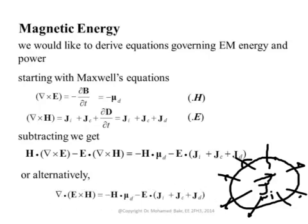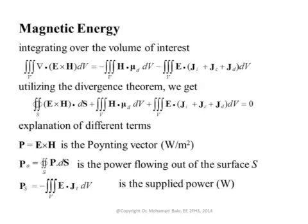We integrate both sides over that volume. We have a certain volume surrounded by a closed surface. We simply integrate both sides over that volume and apply the divergence theorem — so instead of integrating the volume integral of the divergence, we integrate over the surface of E×H itself. This converts the volume integral to a surface integral, replacing the integral of divergence of E×H with the surface integral of E×H·dS.